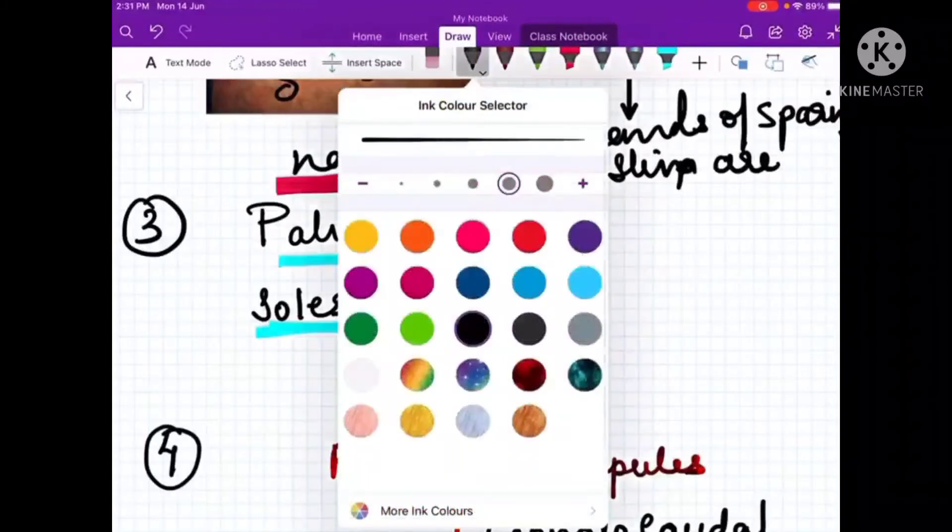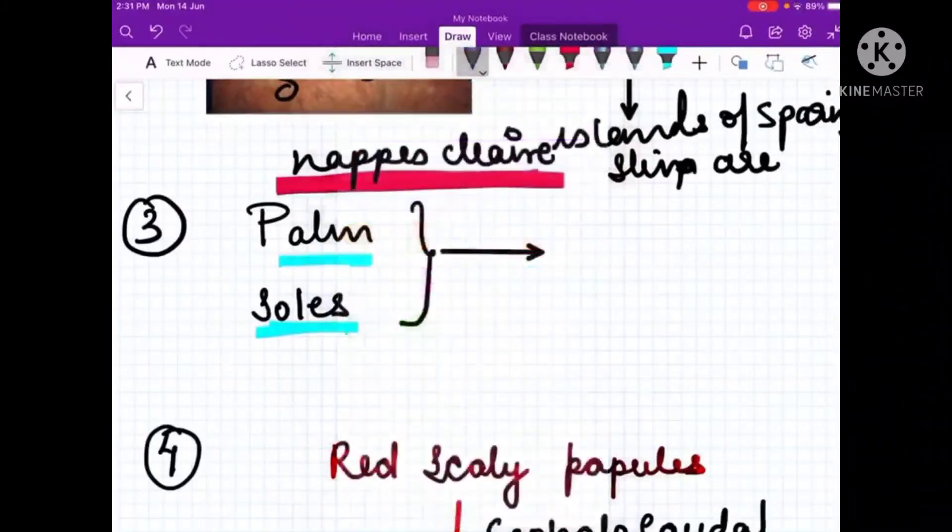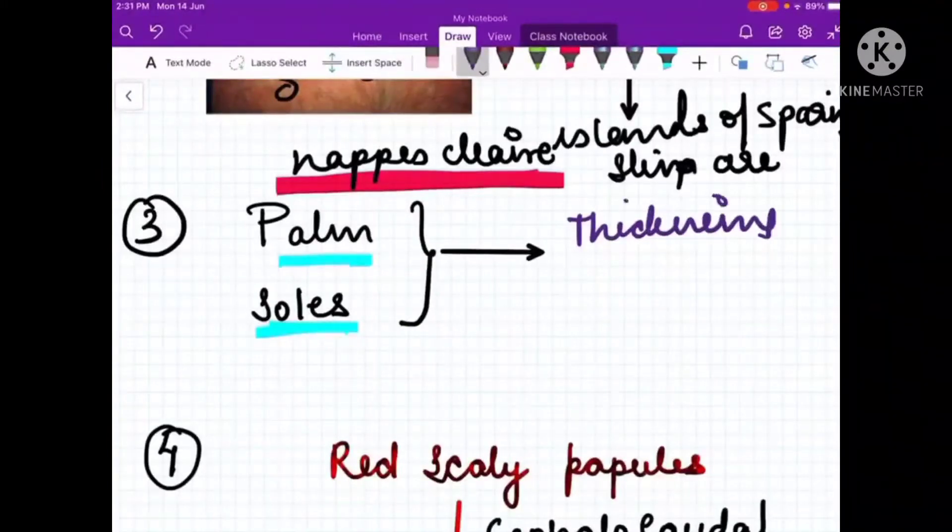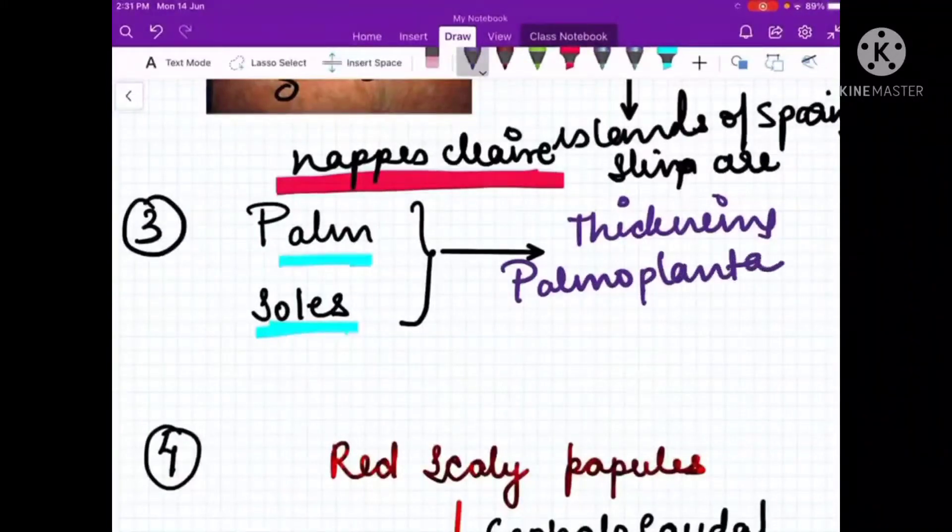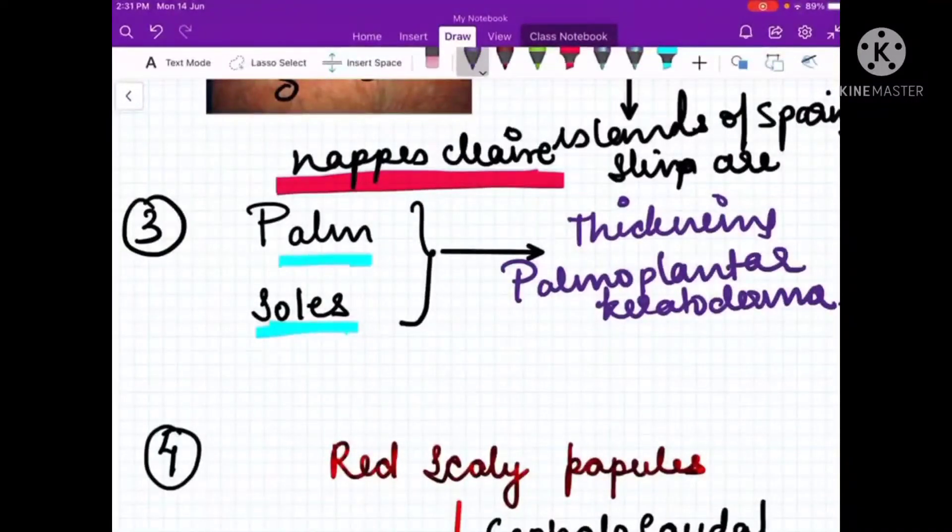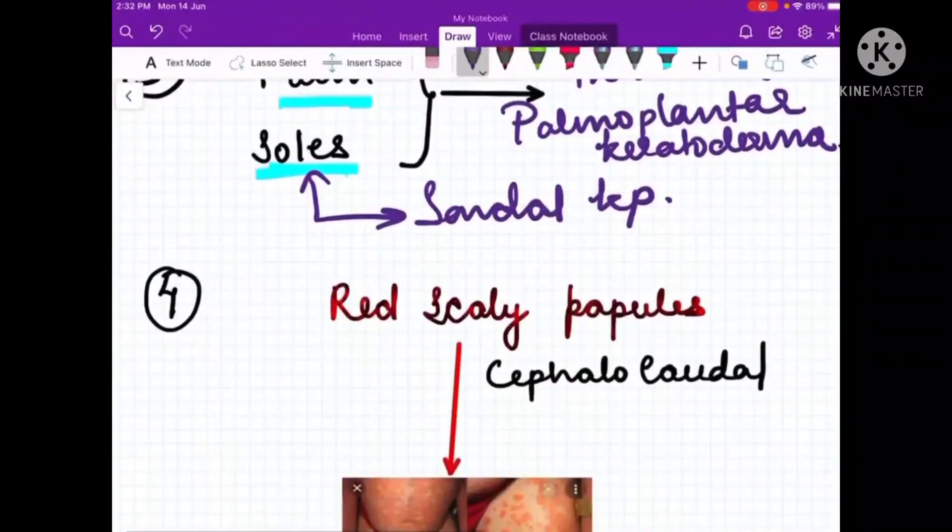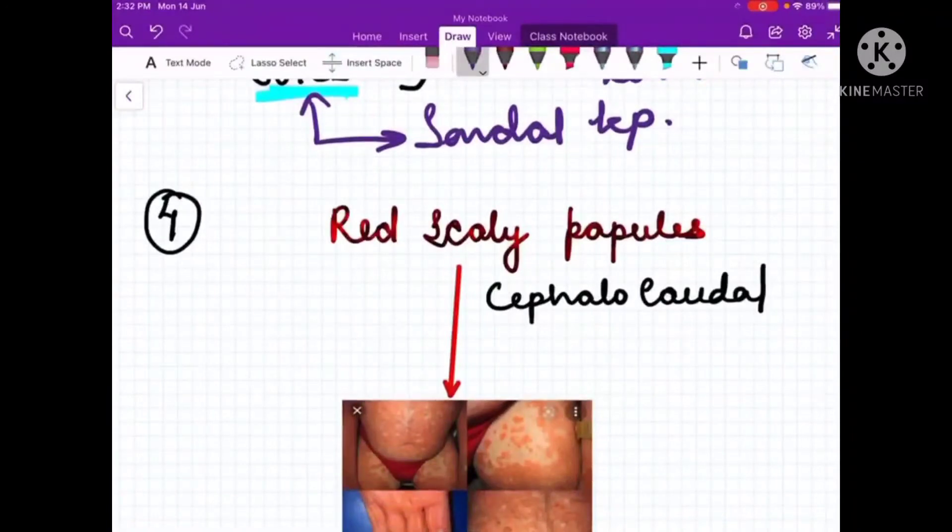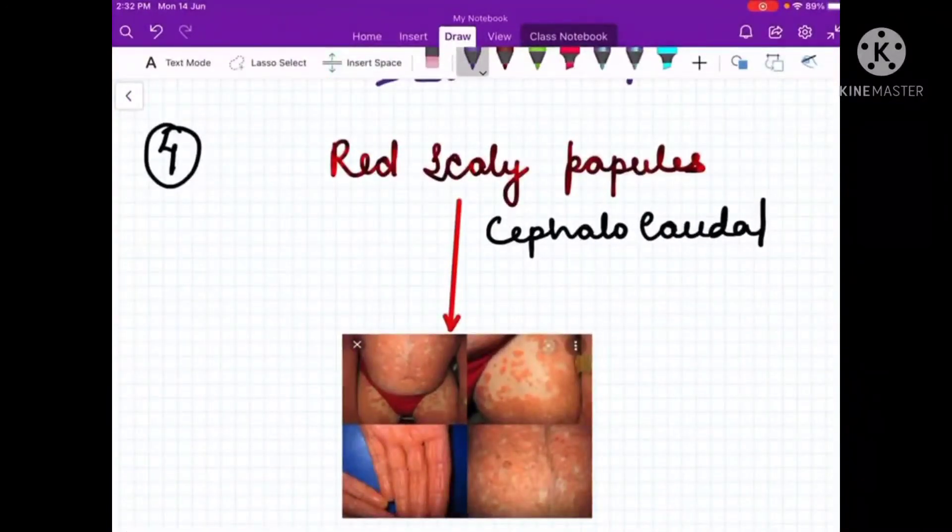There is also involvement of palm and soles. There is thickening of the palms and soles, so this condition is also called as palmoplantar keratoderma. To make it easier for us to learn, they also named it as sandal sign, because we wear sandals and we get these red scaly papules.